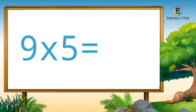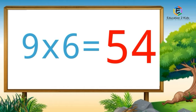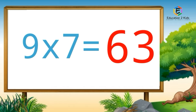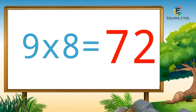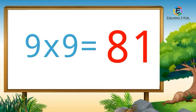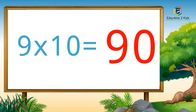Nine fives are forty-five. Nine sixes are fifty-four. Nine sevens are sixty-three. Nine eights are seventy-two. Nine nines are eighty-one. Nine tens are ninety.